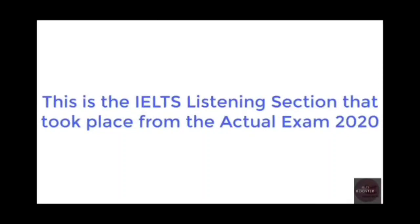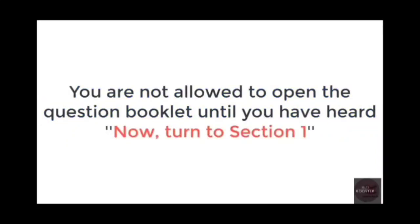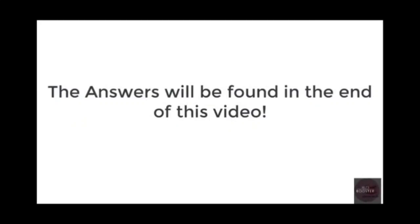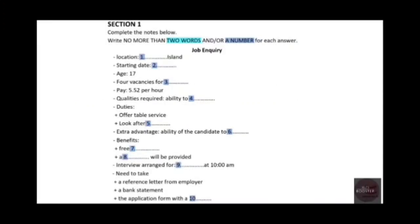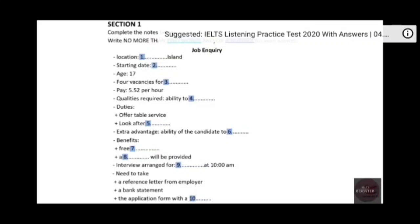You will hear a number of different recordings and you will have to answer questions on what you hear. There will be time for you to read the instructions and questions and you will have a chance to check your work. All the recordings will be played once only. The test is in four sections. Write all your answers in the listening question booklet. At the end of the test you will be given 10 minutes to transfer your answers to an answer sheet. Now turn to Section 1 on page 2 of your question booklet.